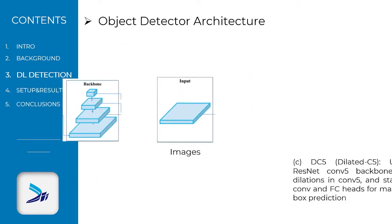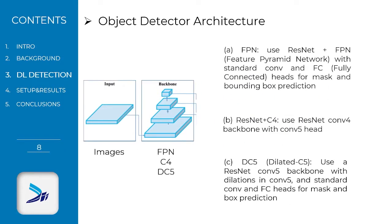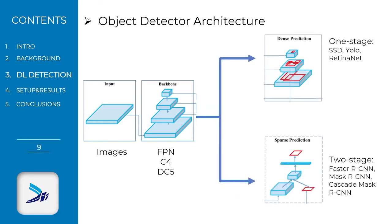Images are passed into the backbone, namely a convolutional neural network, able to extract low, mid, and high-level features. Feature maps thus obtained serve to localize instances. Based on the region proposal step, we can have one-stage detectors such as SSD, YOLO, and RetinaNet, or two-stage detectors like Faster-RCNN, Mask-RCNN, or Cascade-Mask-RCNN.